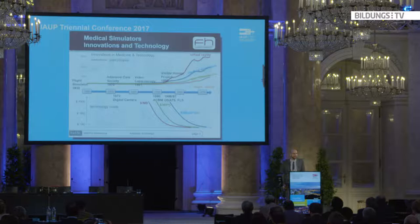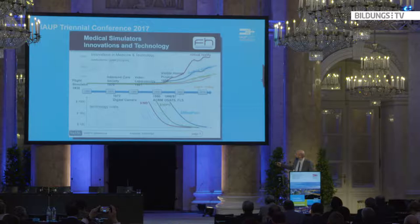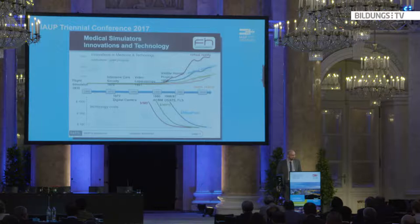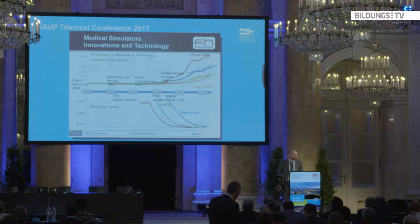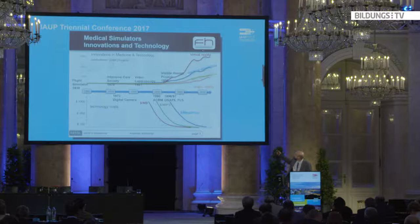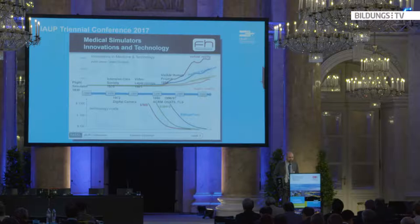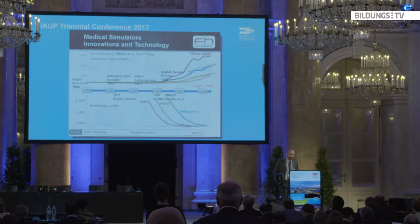The bottom part of the graph shows the prices for technology: the price for storage in dollars per megabyte, the price for computational power, and the price for megapixels for digital cameras. Around 1990, all these prices were going down as technology was rapidly developing, and at the same time publications in medical simulation, simulation-based learning, virtual reality, and augmented reality increased substantially.